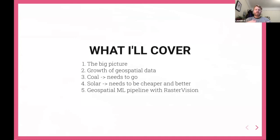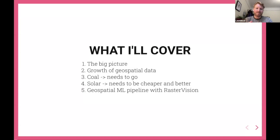What I'll cover — I have quite a lot to get through. I want to cover the big picture on climate and energy, just a couple of snippets to set the scene. Then I'll talk about the massive growth in geospatial and satellite data and the open source tools that go with it, which has enabled even small teams to do powerful things. Then specifically about coal and what needs to happen for coal power, what needs to happen for solar. And then we'll dig into an open source tool called RasterVision that lets you set up geospatial machine learning pipelines, which I used to try and identify solar panels in the UK.